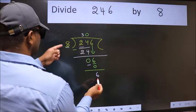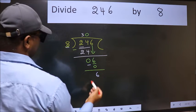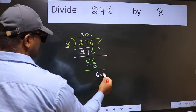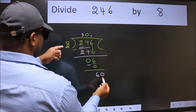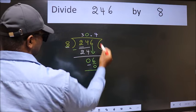6 is smaller than 8, so now we can put the dot and take 0, so 60. A number close to 60 in the 8 table is 8 times 7 is 56.